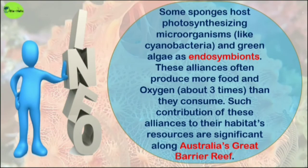Here is one interesting fact about Porifera. Some sponges host photosynthesizing microorganisms such as cyanobacteria and green algae as endosymbionts. These alliances often produce about three times more food and oxygen than they consume, making them very beneficial. Such contributions to habitat resources are significant along Australia's Great Barrier Reef.